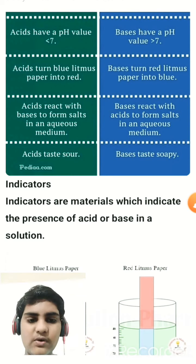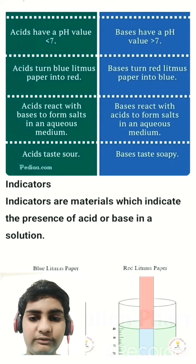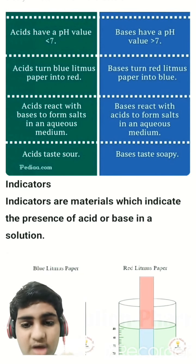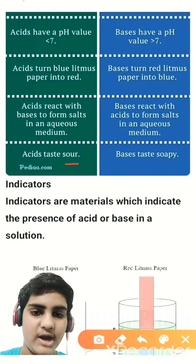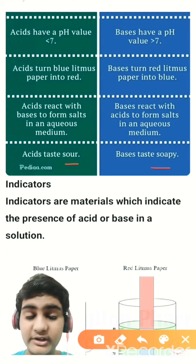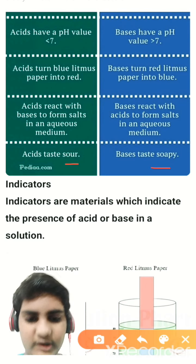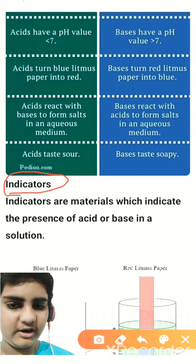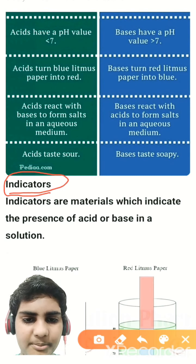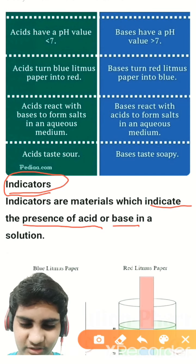Now let's move to indicators. What are indicators? Indicators are very important — they are how we check whether a substance is an acid or a base. We know acids are sour and bases are bitter, but it is not safe to test them with our tongue as it is harmful to health. Indicators are materials which indicate the presence of an acid or base in a solution.